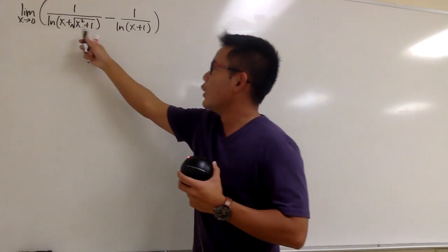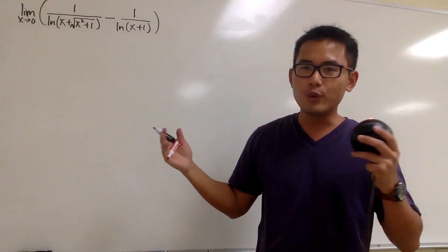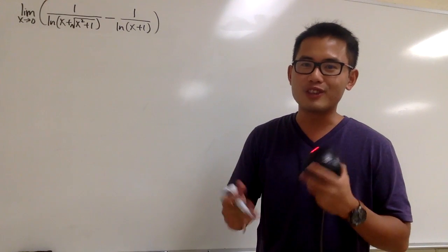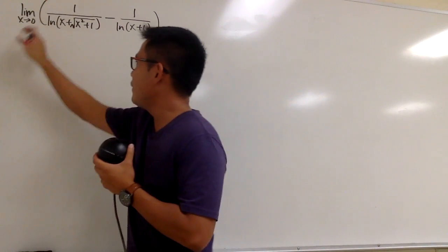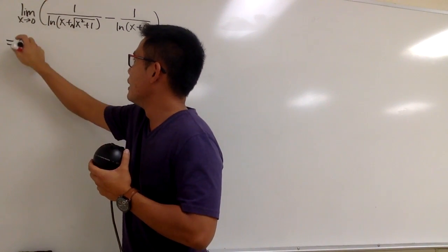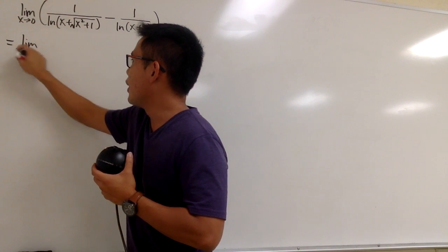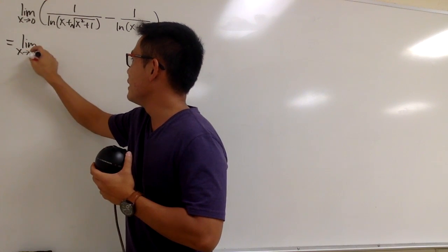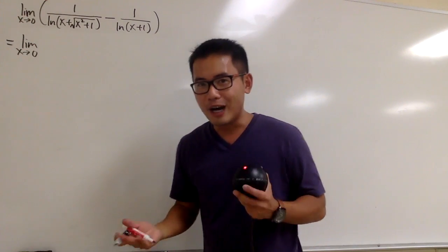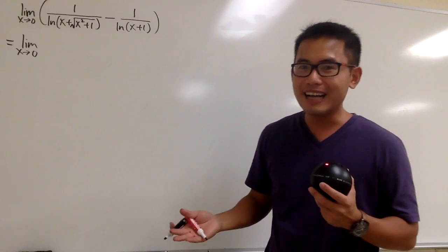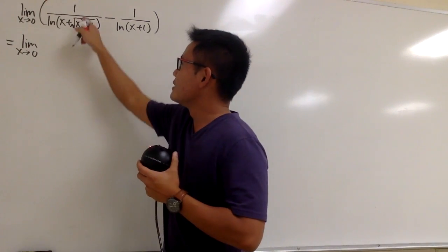As you can see, we have two fractions subtracting each other, so why don't we just combine the fractions to see what we get? You should always write down the lim — x approaching 0. I don't know how many times we have to write that, but just write it down every single time.